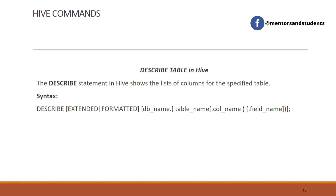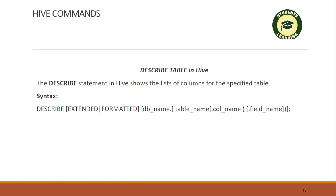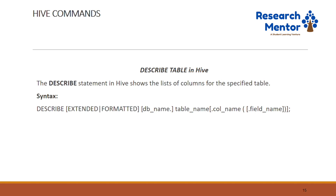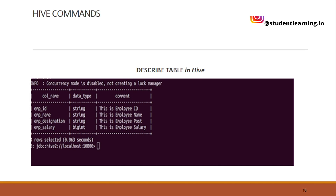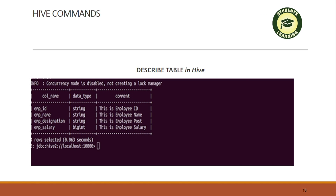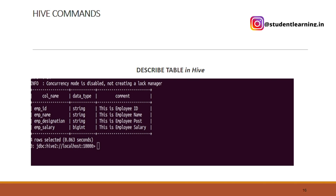Next is the describe table command. Describe command is basically used to display the structure of a table. We can write DESCRIBE with optional EXTENDED or FORMATTED, then the db name, table name, and column name. For example, for a table named emp, the output shows columns: emp_id, emp_name, emp_designation, emp_salary with data types string, string, string, and comments like 'this is employee id', 'this is employee name', 'this is employee post', 'this is employee salary'.